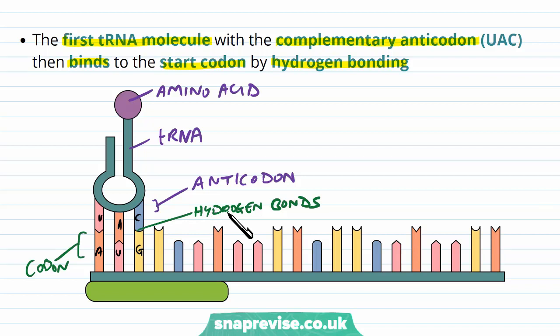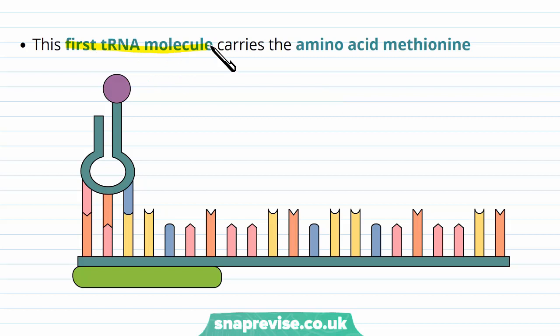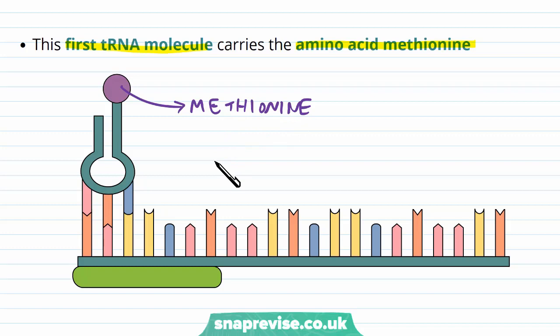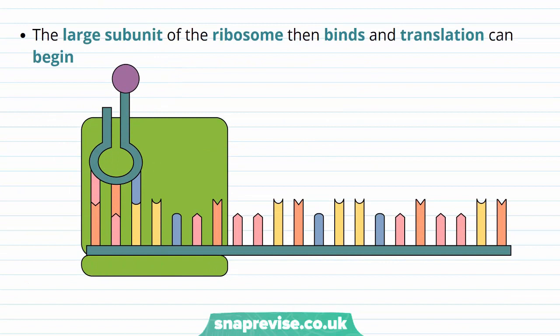So now what's happening: we've got a complex with the small subunit of the ribosome, the mRNA, the tRNA's anticodon bound to that codon, and that tRNA carrying its amino acid. The first tRNA molecule always has the anticodon UAC, and it always carries the amino acid methionine. So any polypeptide that gets made starts with methionine, though it can be clipped off later when the protein is finished, so some proteins are found without it. Once this is all formed, the large subunit of the ribosome binds, which is much larger than the small subunit, and this whole complex can then begin translation.